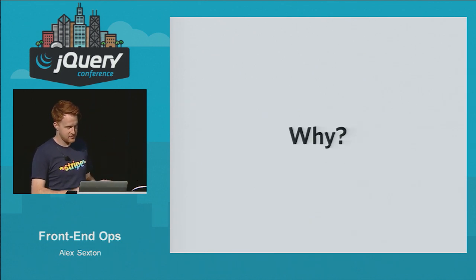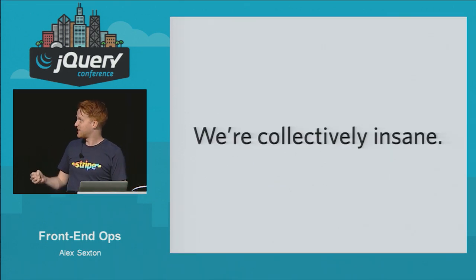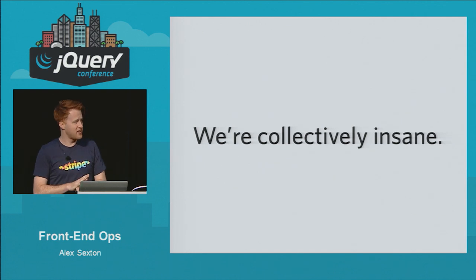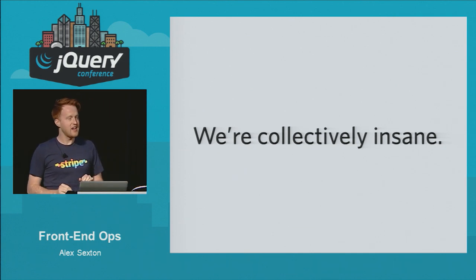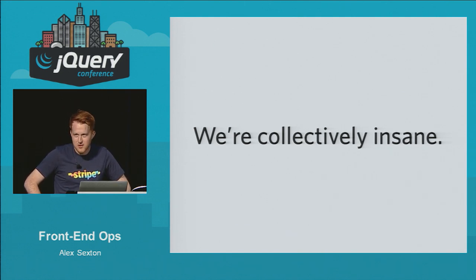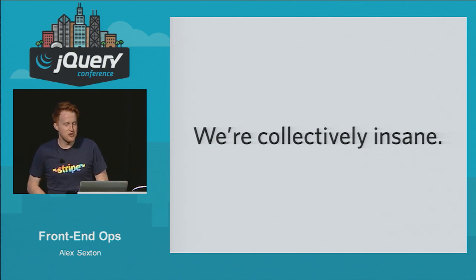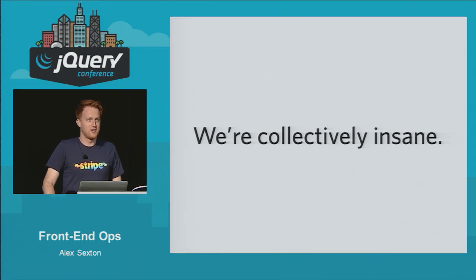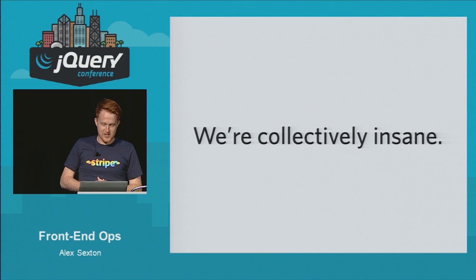Why do we want all this stuff? We are all collectively insane as front-end engineers. In the front-end world, we accept running absolutely blind production applications with a scarily natural ease. How many of you have error logging turned on? That's about 3% of people in the room. If you talk to someone who runs an API and ask how it's running and they say "I don't know, it's in production" — that's insane, but that's exactly what we're doing.